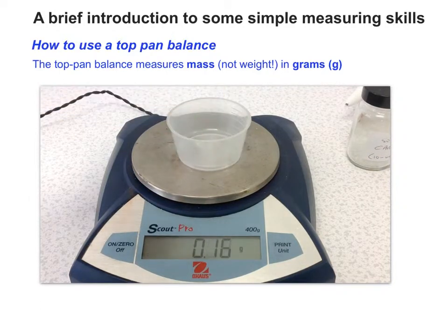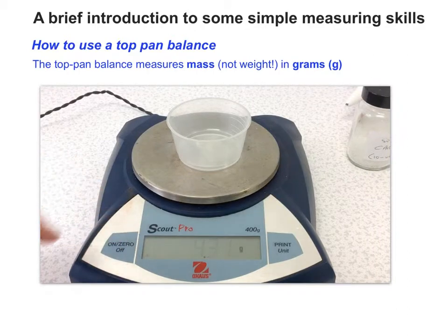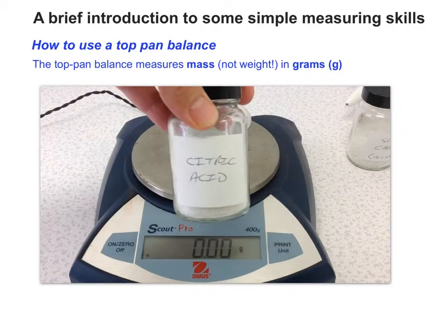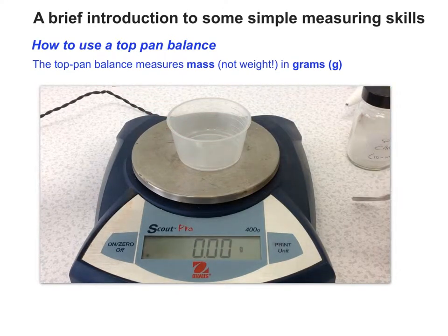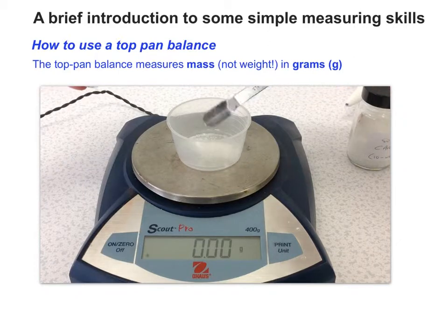I'm weighing the weighing boat, and then I'm going to zero it so the top pan balance reads zero. Now I'm going to weigh citric acid, exactly one gram, so I'm looking for 1.00 grams.